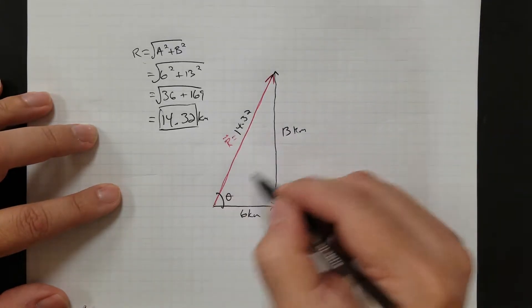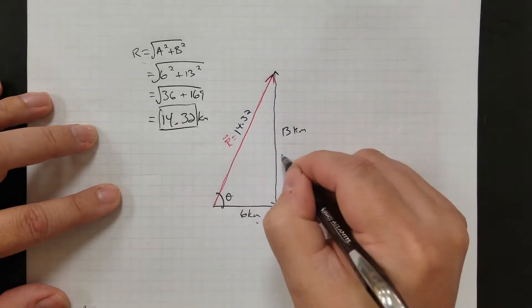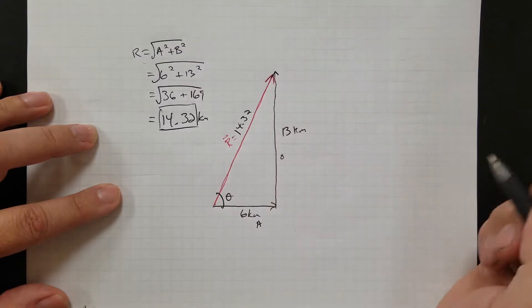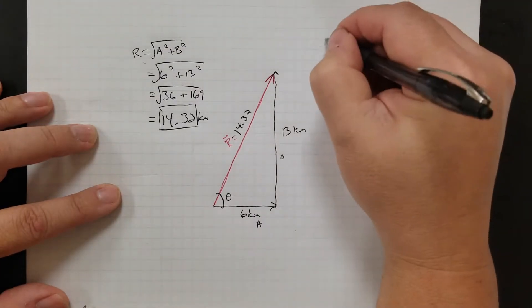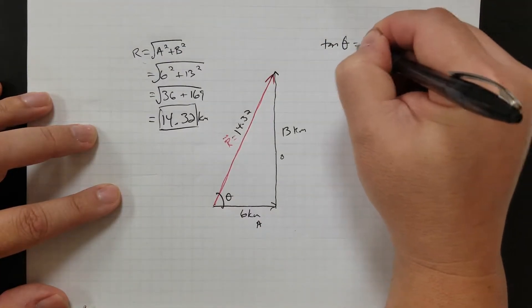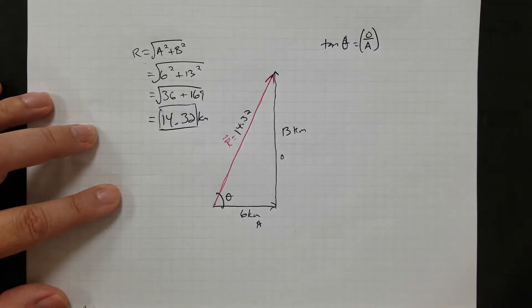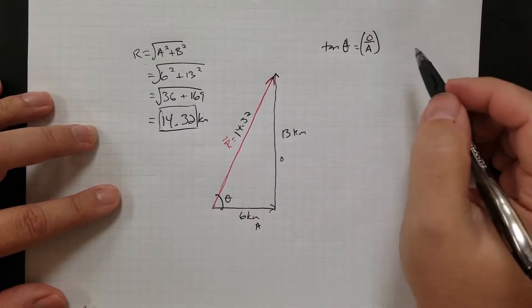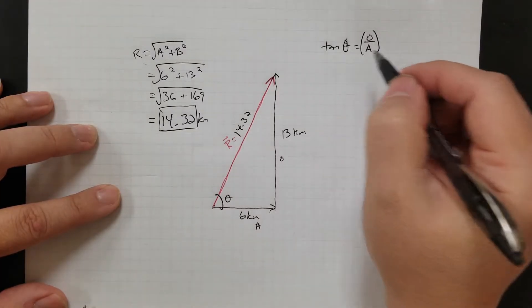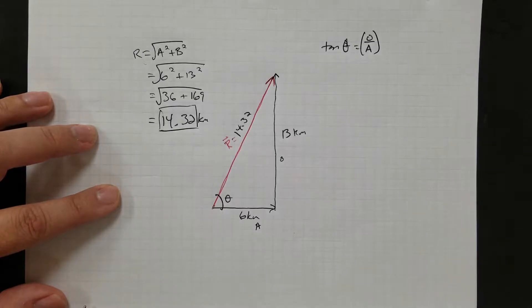So I'm going to use tangent because tangent's opposite over adjacent. So this is the opposite side, and this is the adjacent side. So tangent of an angle equals the ratio of the opposite side to the adjacent side. Okay. If I don't know the angle, I can use inverse trig functions.